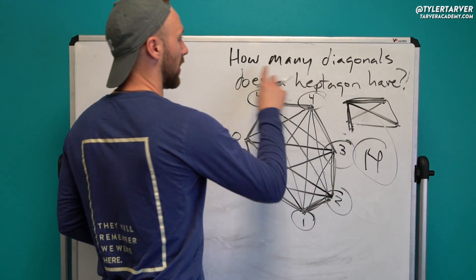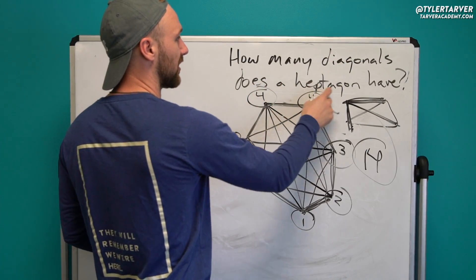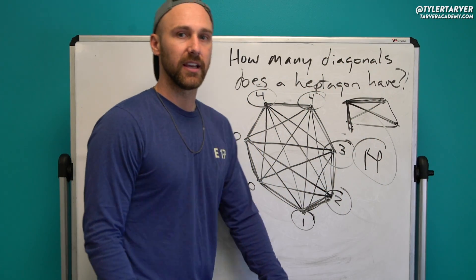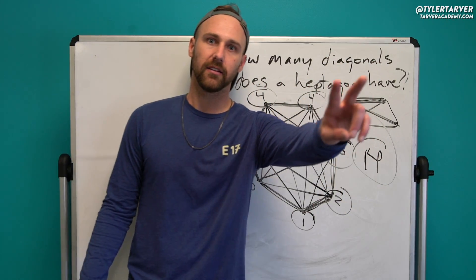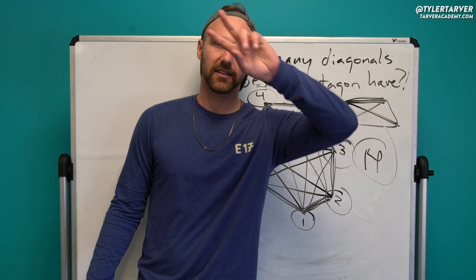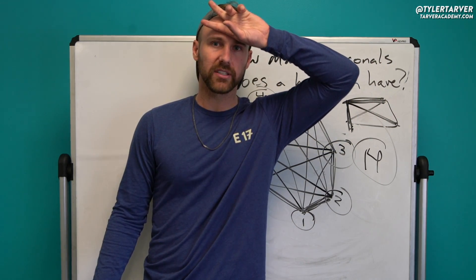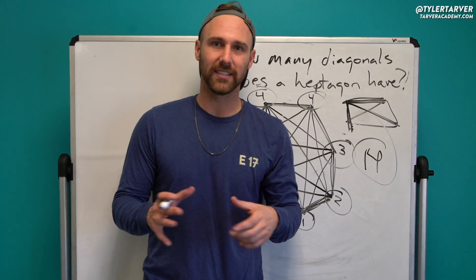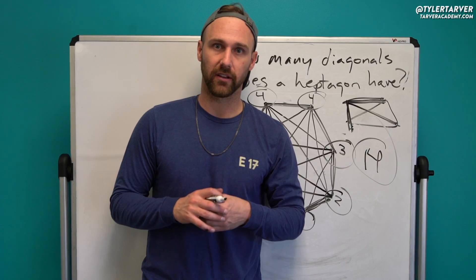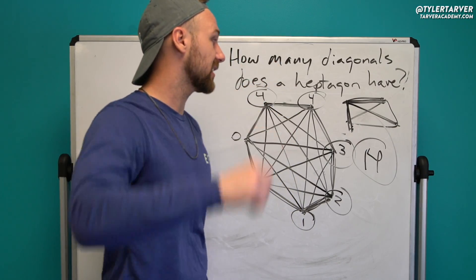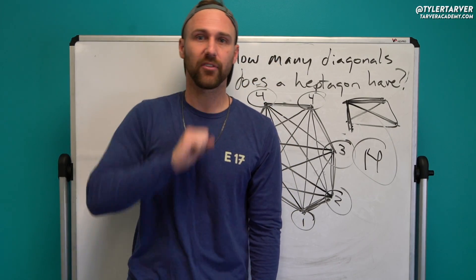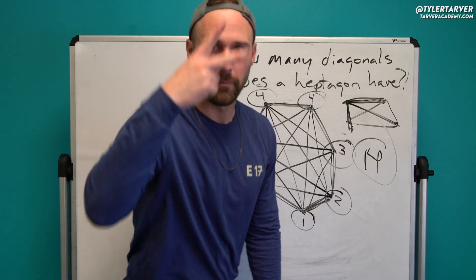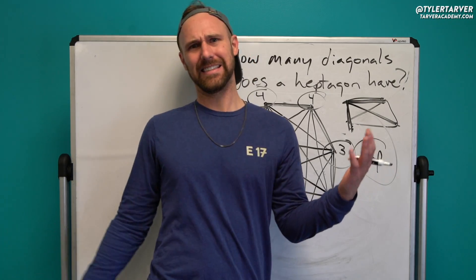So let's check our question: how many diagonals does a heptagon have? Fourteen is your answer. You got it, you did great. Hey, it's like I always say — you're not bad at math, you're always improving. This is Tyler Tarver. Don't forget to subscribe, have a great day, check in for more. Peace — tell your friends.